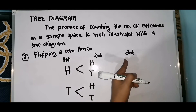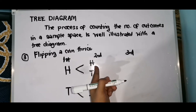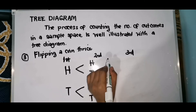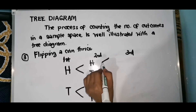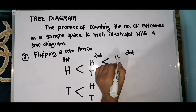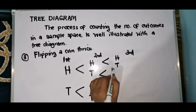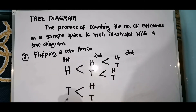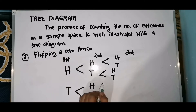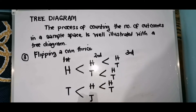For the third flip, if the second flip gave head, the third flip can still be head or tail. If the second flip gave tail, the third flip also branches into head or tail. Similarly, for tail then head, and tail then tail from the first two flips, the third flip can still be head or tail.